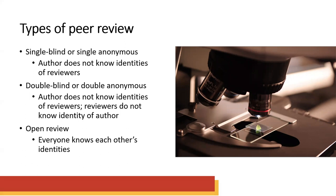Then we have double-blind or double-anonymous: the author does not know the identity of the reviewer, and the reviewer does not know the identity of the author. Identifying details in the submission are redacted. This model is more common in the humanities or social sciences. What's good about this model is that it encourages forthright reviews and importantly reduces opportunities for bias. But sometimes that anonymity fails, making the process not actually double-blind at all — especially possible in smaller niche fields where scholars are more likely to know each other.